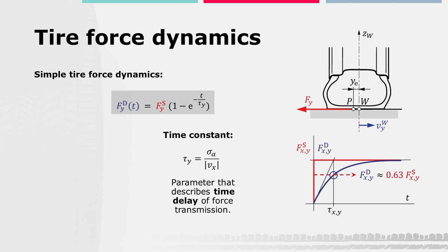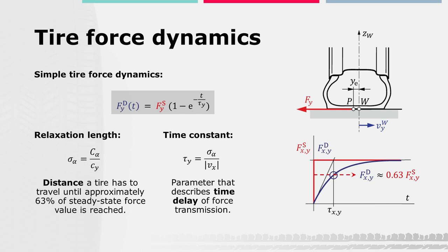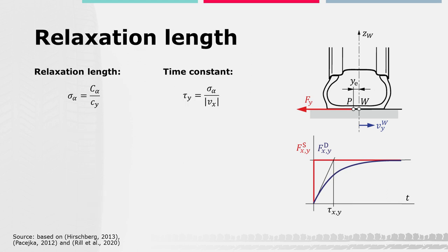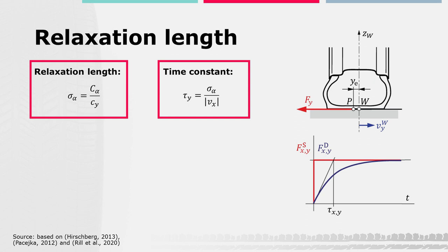In conclusion, the time constant describes how fast a tire reacts. As we already know, the time constant is a function of the relaxation length, which means that the relaxation length describes the distance a tire has to travel until approximately 63% of the steady-state force value is reached. These considerations also hold for a decrease of the slip angle and the force, which is called relaxation behavior. The dynamic or transient behavior of tire forces can be simplified and described by two parameters: the time constant and the relaxation length, which characterize the dynamic force response due to slip changes.